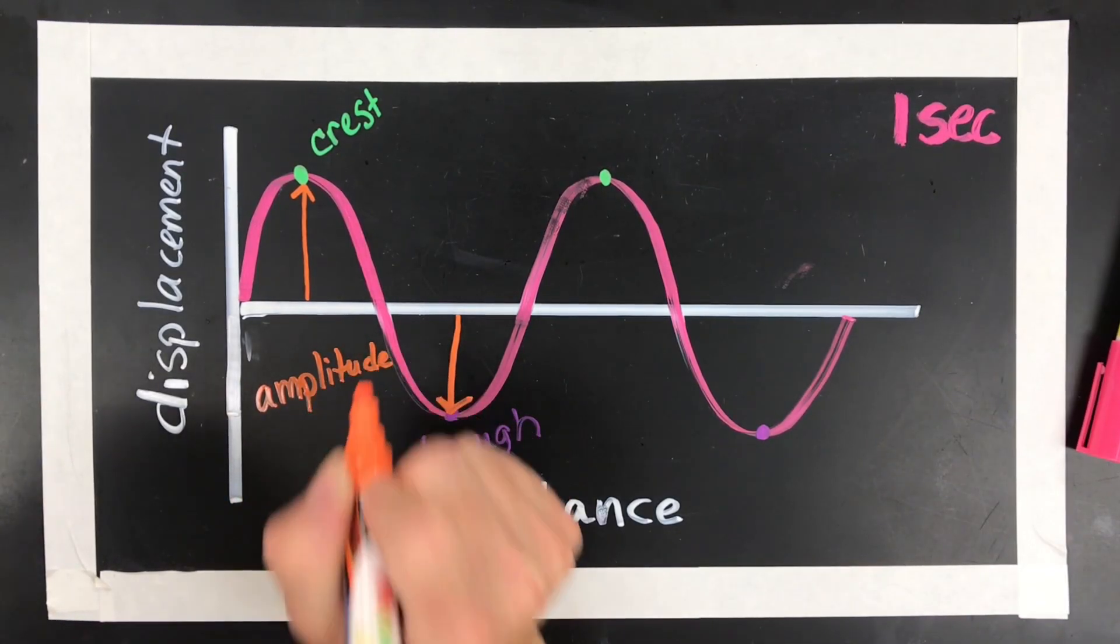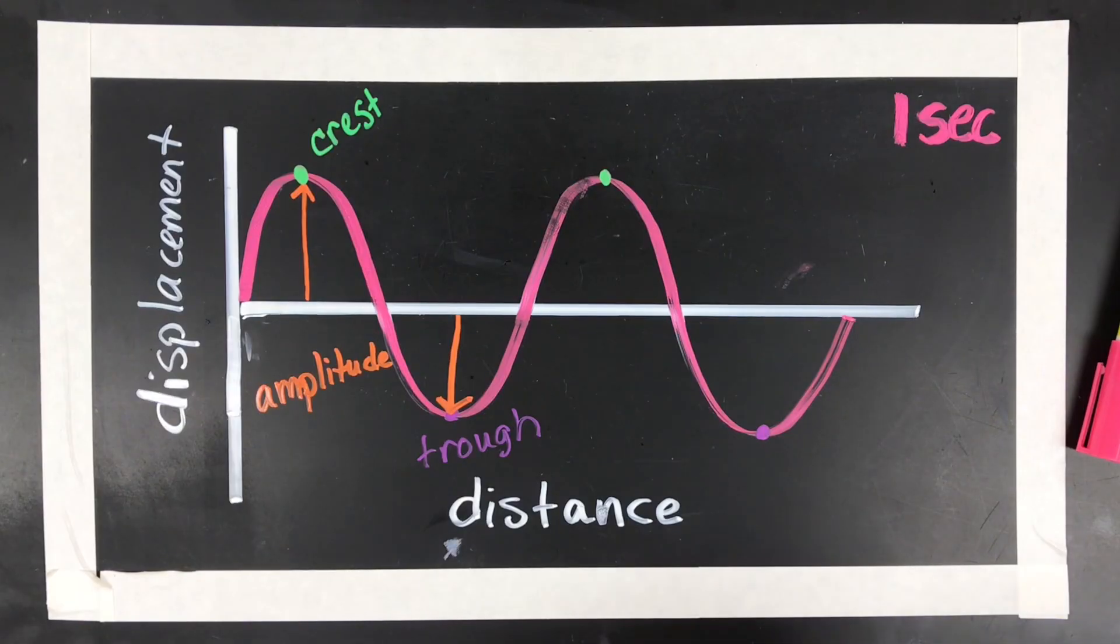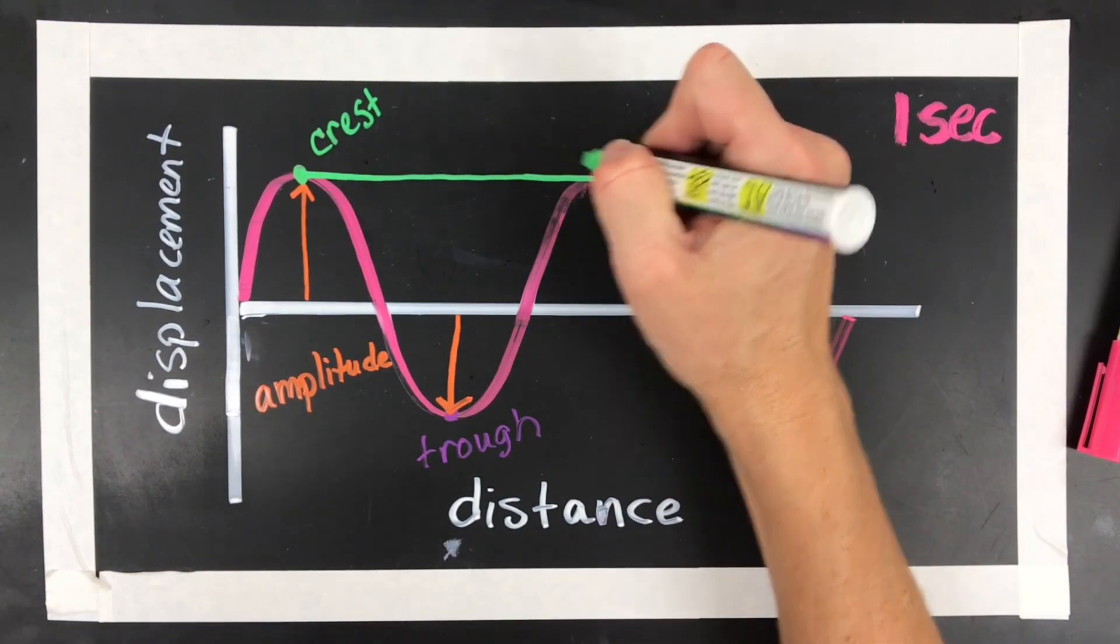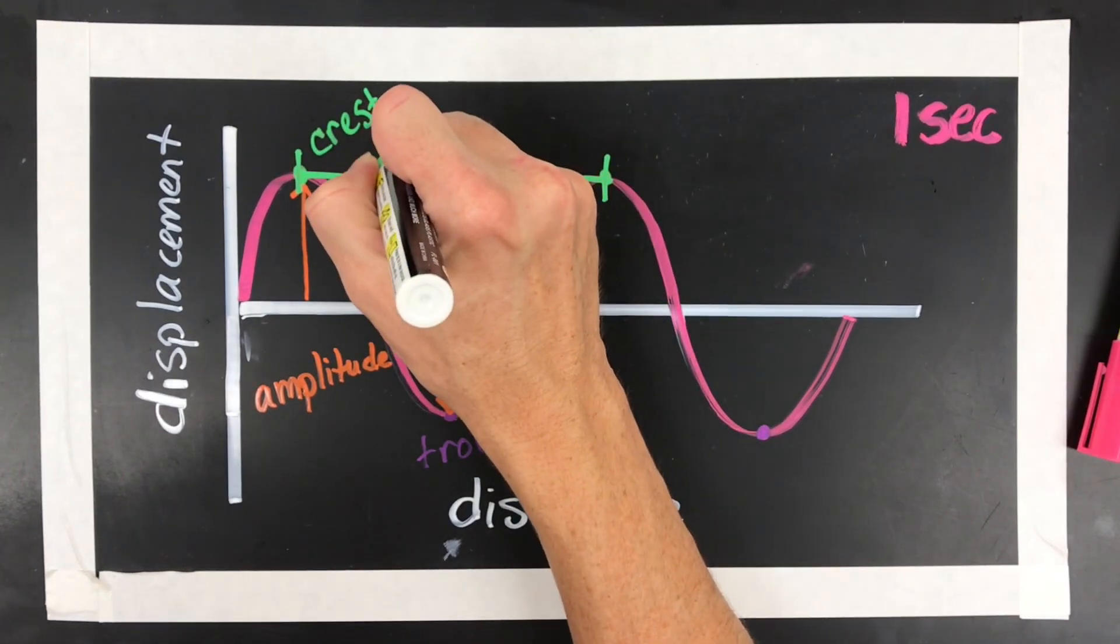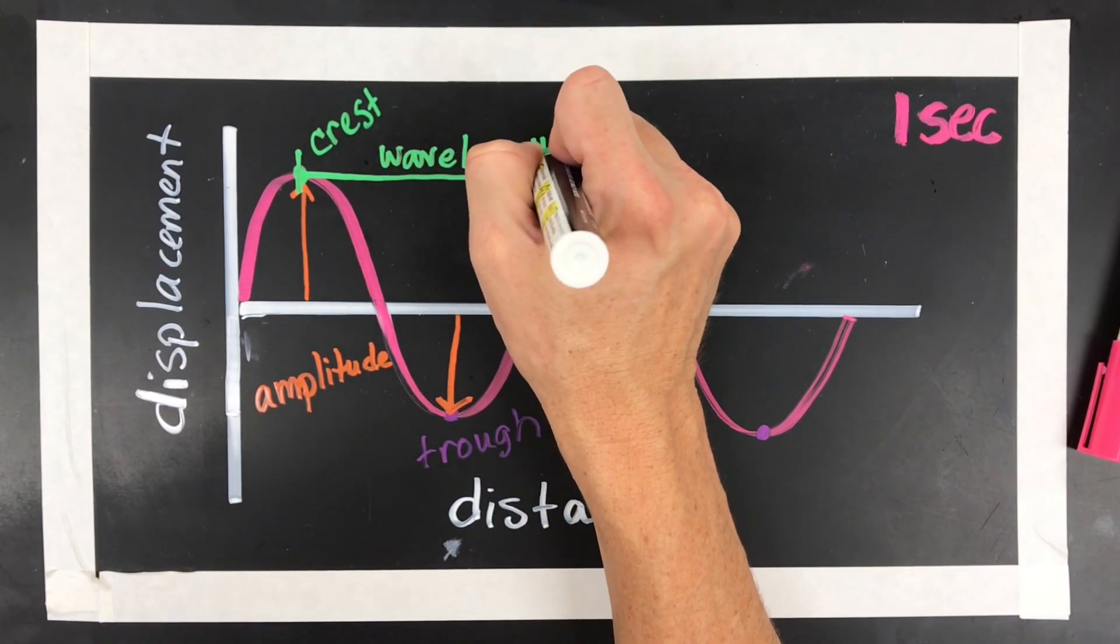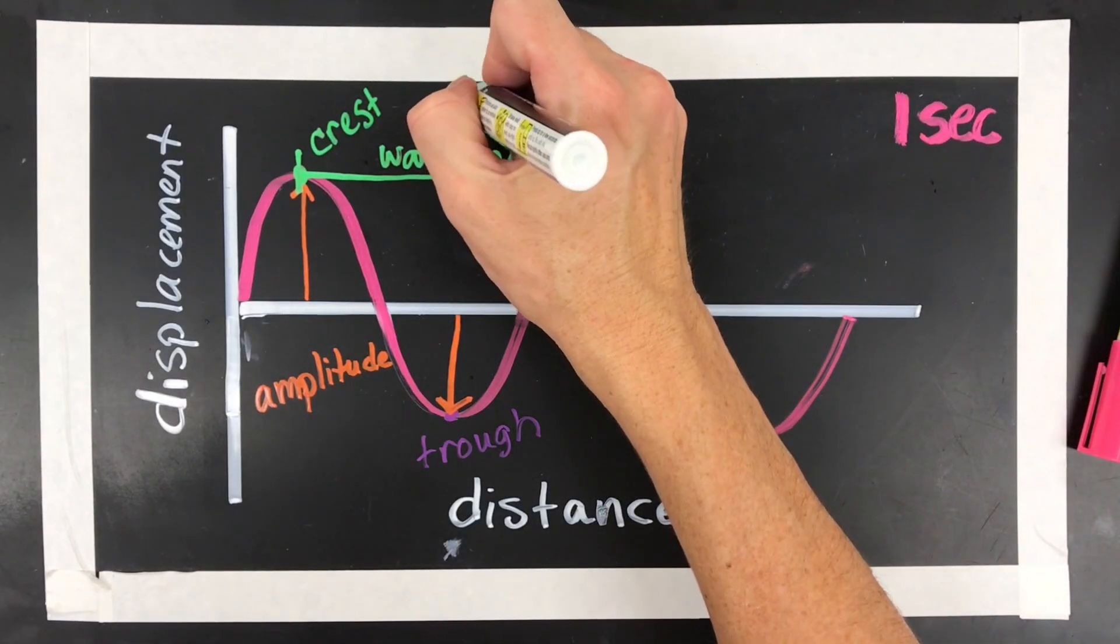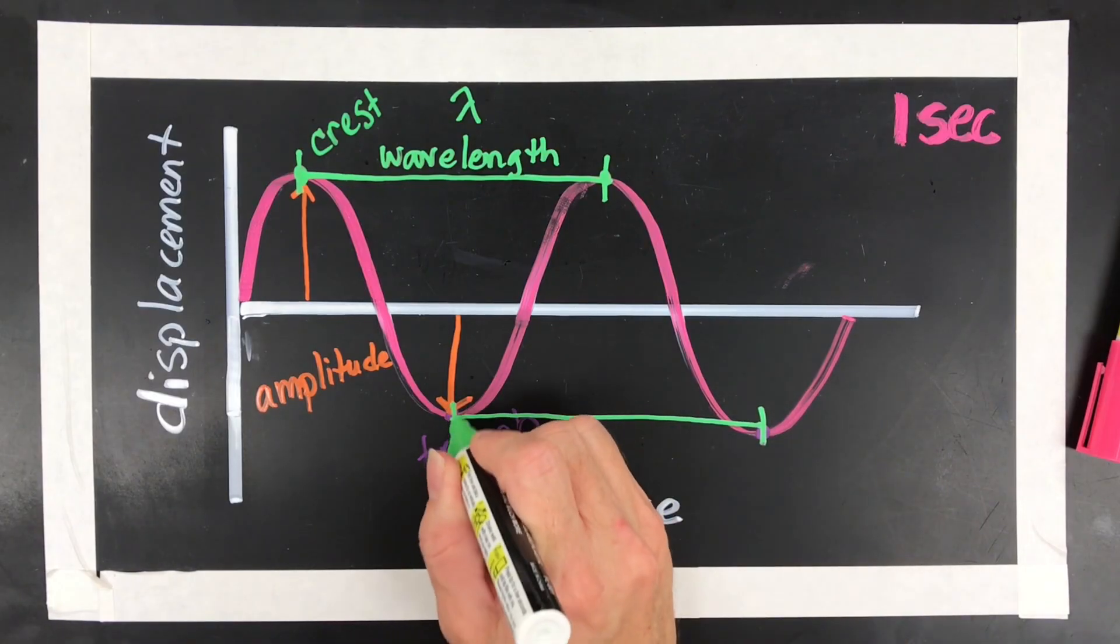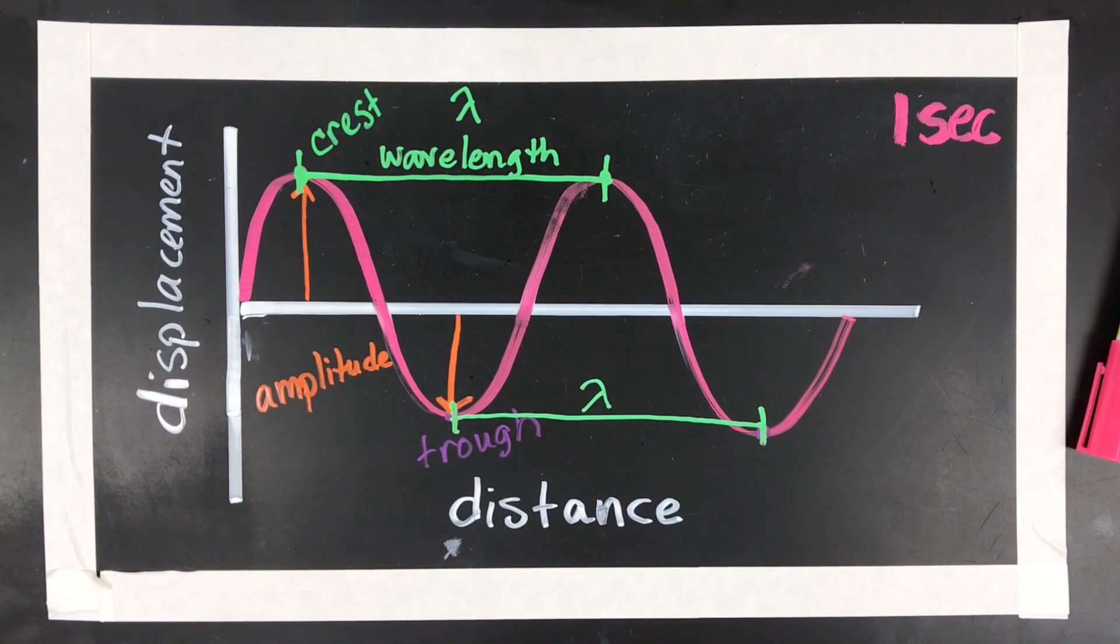And then the next thing would be wavelength. There's a couple ways to do wavelength. You can do crest to crest, here to here, is wavelength. Don't get confused. A wavelength is given the symbol lambda. So you might see that some people will label trough to trough as wavelength. But to be honest with you, there's one more thing that's important.